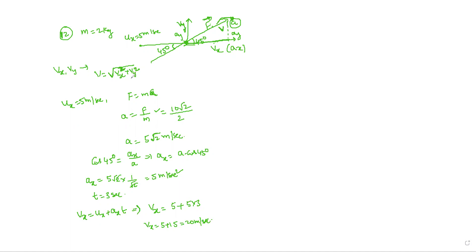For vy: the initial vertical velocity uy equals zero, since the body starts with velocity only in the horizontal direction.